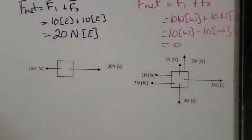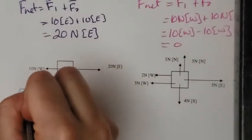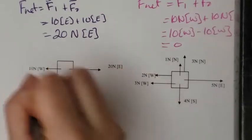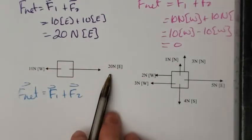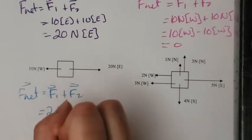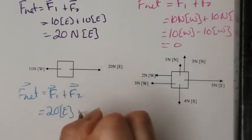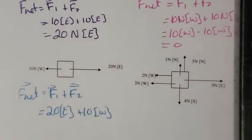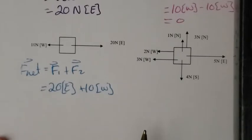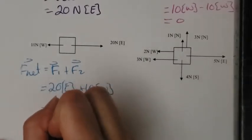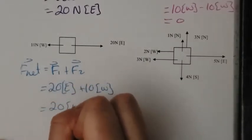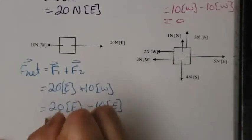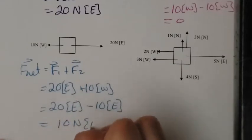This one here. We have Fnet is equal to F1 plus F2. We have 20 Newtons east, so 20 east plus 10 west. Again, these two are pointing in opposite directions. So what I need to do is make one of them negative. I'm going to make the second one negative because it's smaller. So 20 east minus 10 east. And I end up with 10 Newtons east.